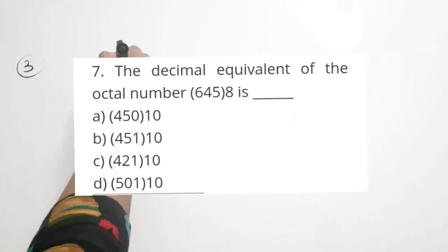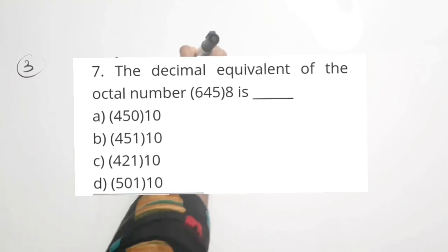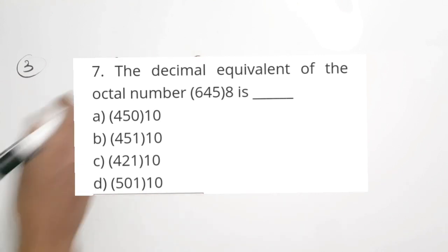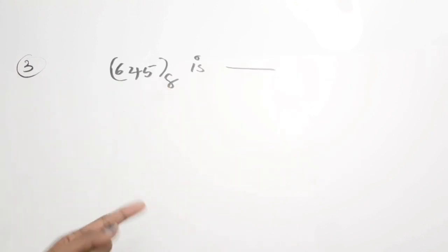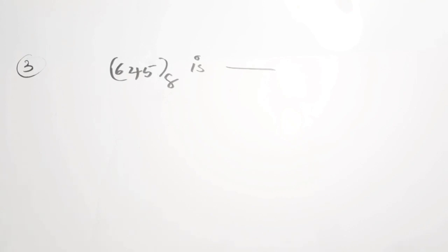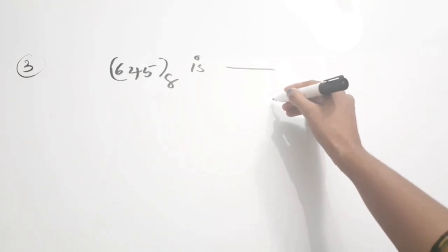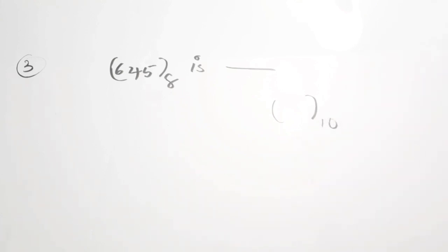Third question is from digital electronics, from the number system conversion. The decimal equivalent of 645 to the base of 8 is blank. Since it is to the base of 8, it is an octal number. We have to convert that to decimal, that is to the base of 10. These types of conversions I have explained in a previous number systems quick revision video — how to convert a number from octal to decimal and vice versa.